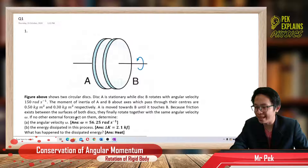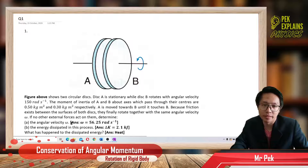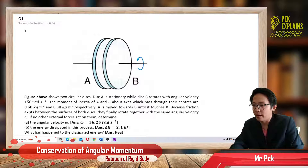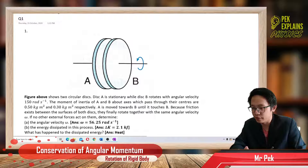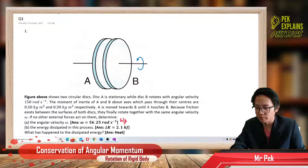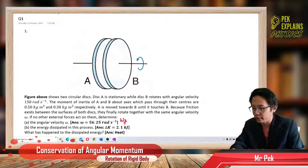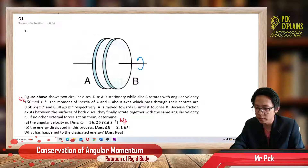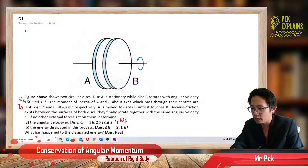If no other external force acts on them, determine the angular velocity omega — that means we want to find the final angular velocity after they combine. We are given the initial angular velocity and also the moment of inertia IA and IB.